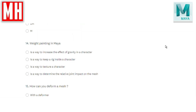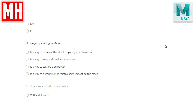Question number fourteen: weight painting in Maya — is it a way to increase the effect of gravity in a character, a way to keep a rig inside a character, a way to texture a character, or a way to determine the relative joint impact on the mesh? The correct answer is D. Once you've created a character and have a rig inside, you bind skin to connect the body to the rig. Weight painting lets you control certain areas where there's less flex going on than others — it determines the relative joint impact on the mesh.